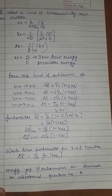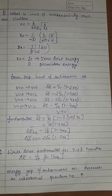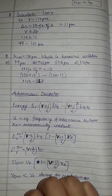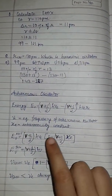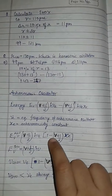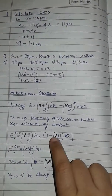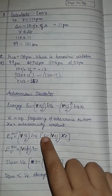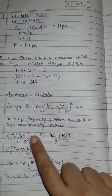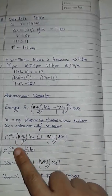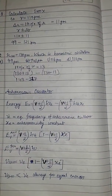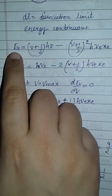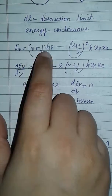The energy gap of anharmonic oscillations decreases as the vibrational quantum number increases, because the quantum number is subtracted from the value. Therefore quantum number and energy are inversely proportional.